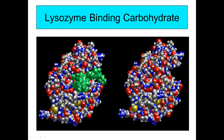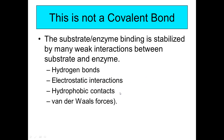In some enzymes they're able to bind a variety of different substrates, but they have a preference or tighter fit with one substrate over another. In the case of lysozyme, different types of carbohydrates could potentially bind, but some will work better than others. This surface interaction between the substrate and the enzyme is stabilized by weak interactions — not a covalent bond — such as hydrogen bonds, electrostatic interactions, hydrophobic contacts, and van der Waals forces.